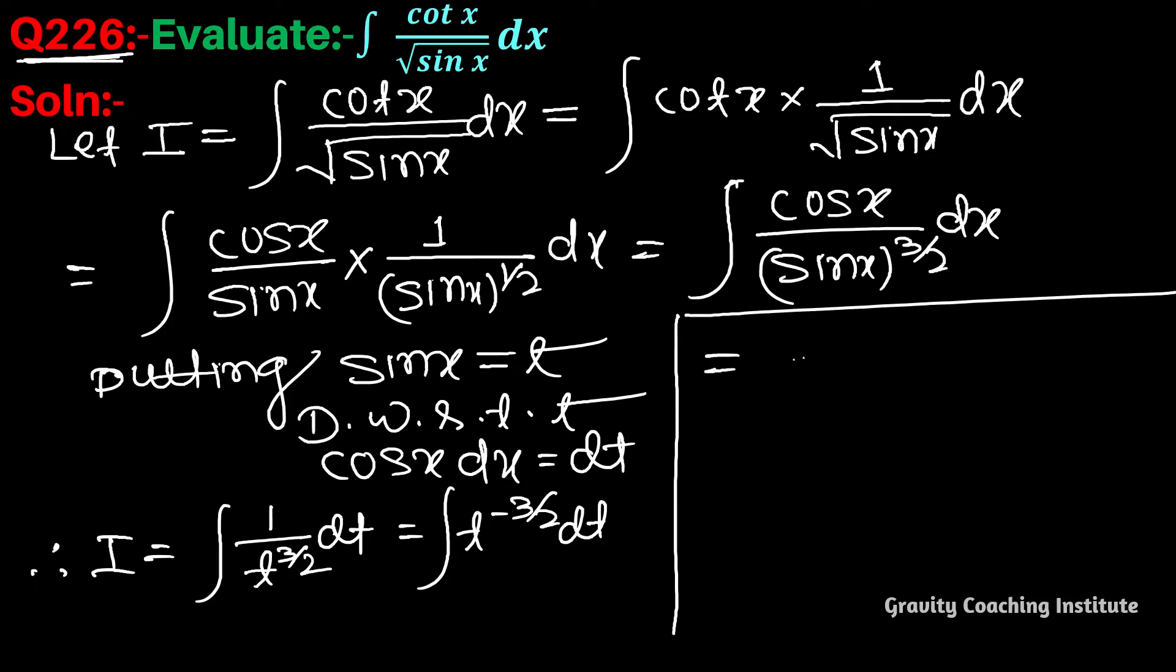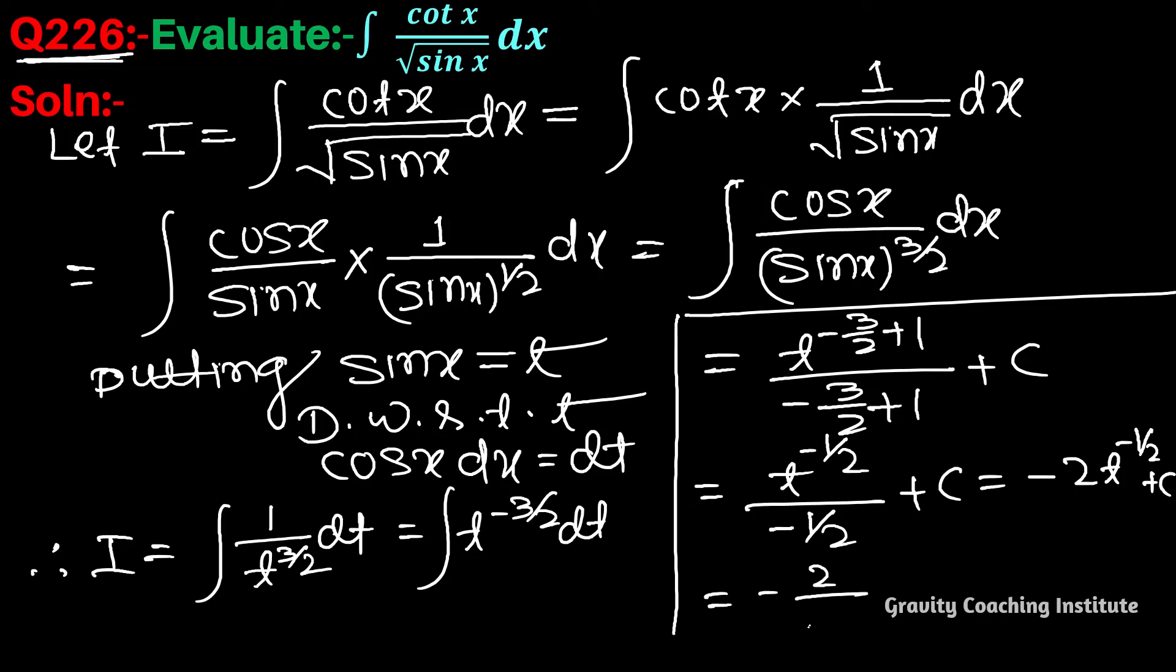Equal to, और इसका integration होगा t to the power minus 3 by 2 plus 1 upon minus 3 by 2 plus 1. तो यह होगा t to the power minus 1 by 2 upon minus 1 by 2 plus c equal to. तो यह होगा minus 2 t to the power minus 1 by 2 plus c equal to minus 2 by t to the power 1 by 2.